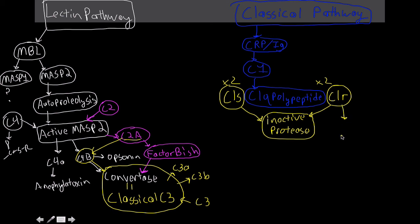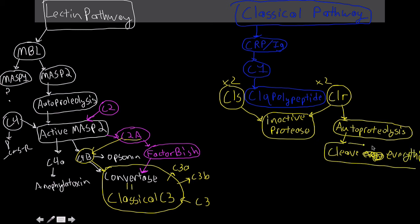So this binding here is going to undergo a conformational change where C1-r, if you could, I think that's how I put it. So C1-r is going to undergo autoproteolysis. And then after it essentially frees himself up, he's going to cleave everything else. Cleaves everything. Okay, so once he starts cleaving everything, he's going to cleave C1-s.